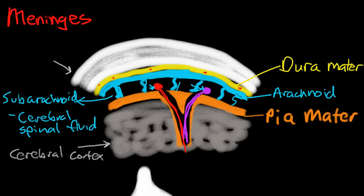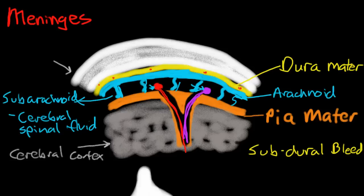You hear some terms clinically, like a subdural bleed. Where does a subdural bleed take place? Usually there is no space between the dura and the arachnoid, but if you have a traumatic brain injury, you can disrupt some of the vessels there. Some of these vessels will break and bleed, and blood will get in between the dura mater and the arachnoid layer of the meninges — and that causes a subdural bleed.